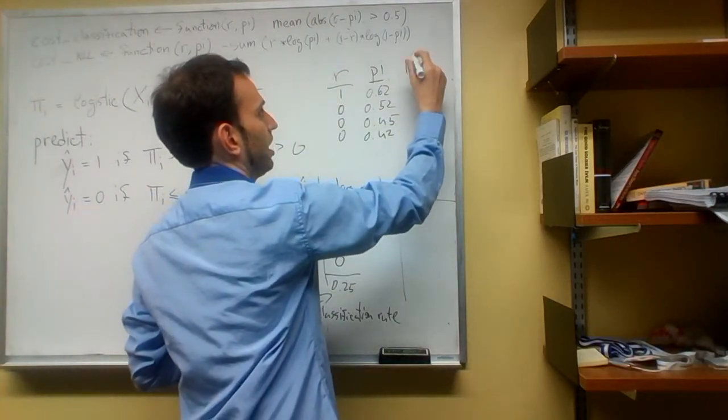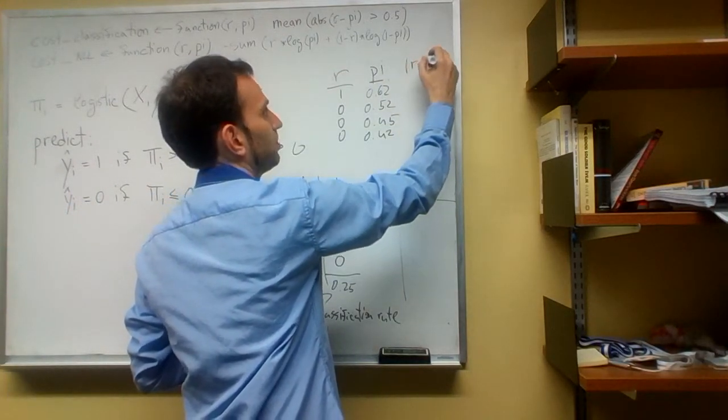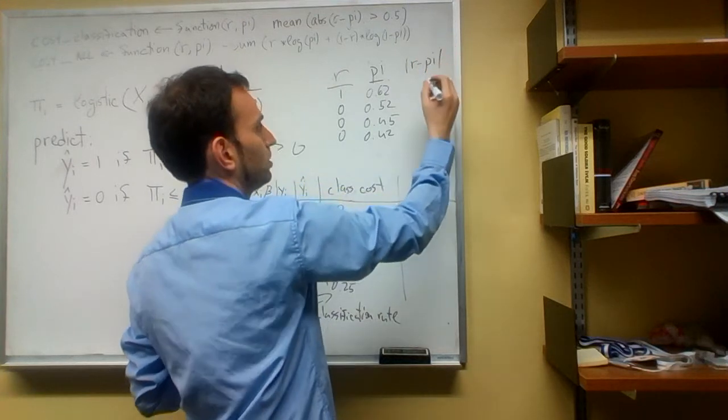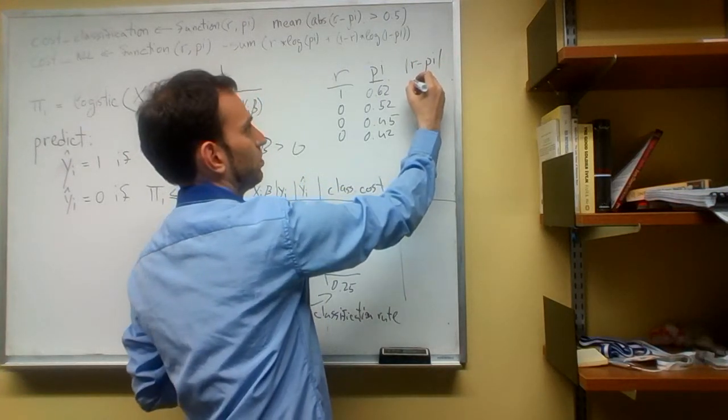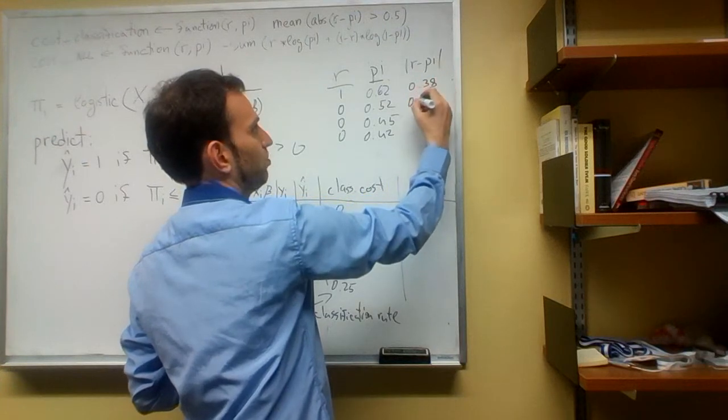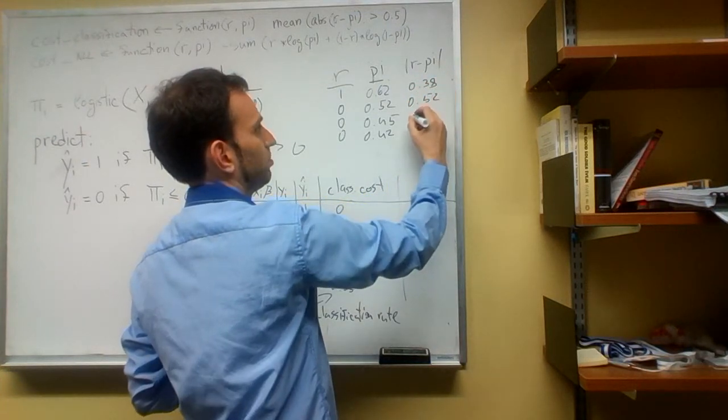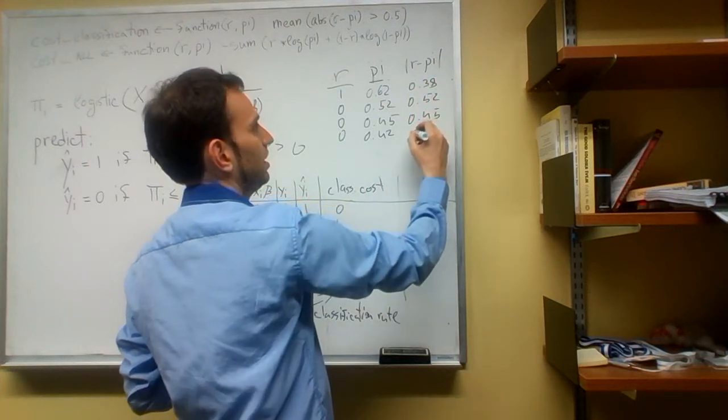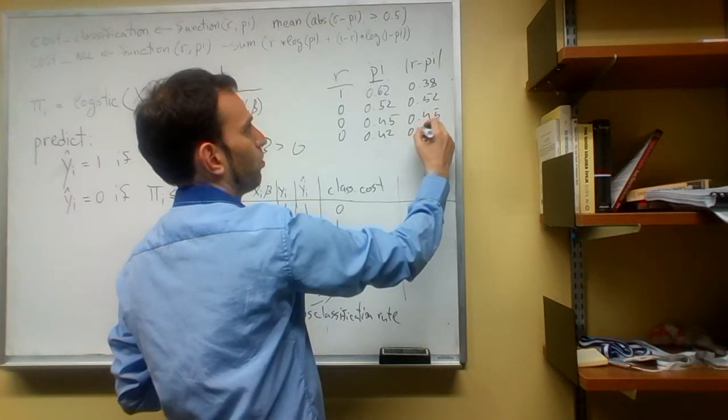So let's do that. The absolute value of r minus pi for each of the coordinates here, well this is going to be 0.38, this is going to be 0.32, this is going to be 0.45, and this is going to be 0.42.